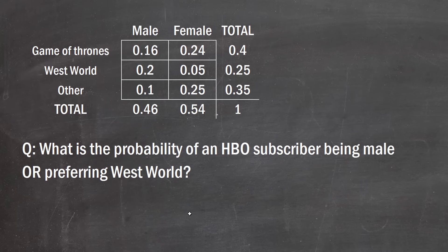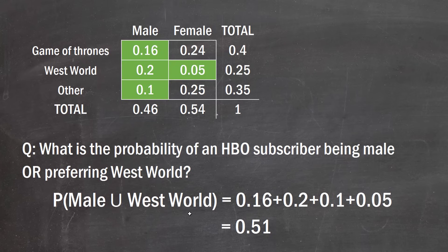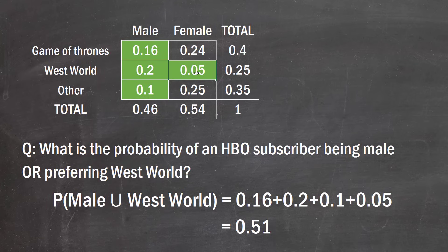Now here's a slightly different one: what's the probability of a subscriber being male OR preferring Westworld? This is not an intersection — it requires summing up all joint probabilities where at least one of those conditions is met. The male column gives three cells, and the Westworld row adds additional cells. Summing those four distinct cells together gives 0.51.